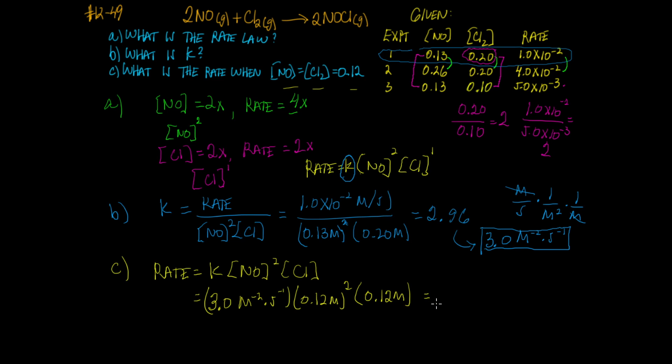We get 3 times 0.12 squared times 0.12, which equals 0.0432. The units for rate are always molarity per second. That's the answer to part C. I hope this helps you think through these problems. Thank you for watching.